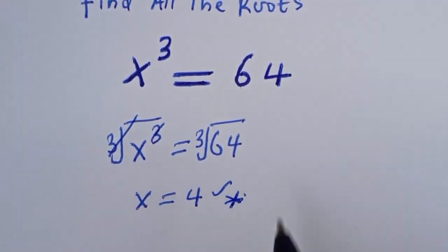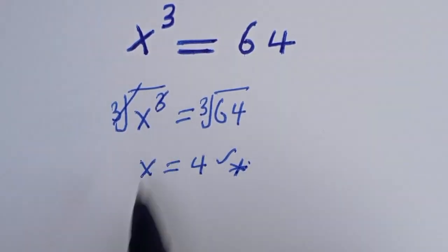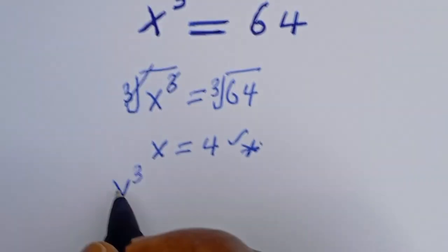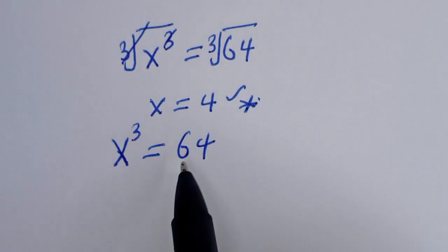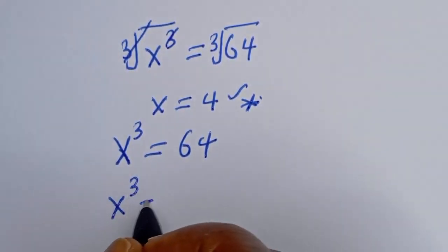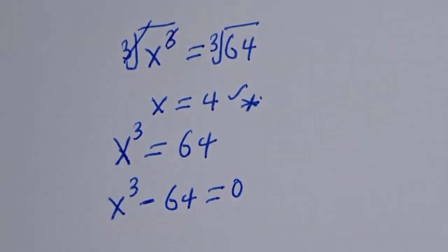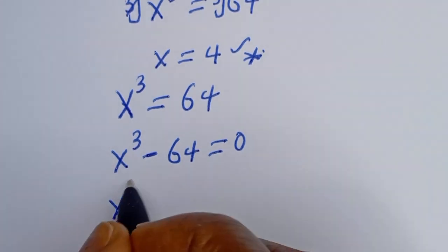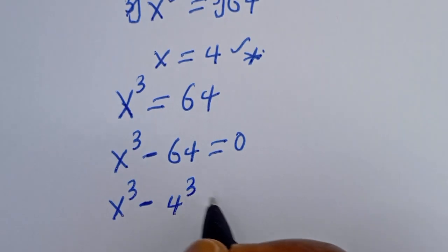Let's find all the roots of this equation. We have s to the power of 3 is equal to 64. Let's take everything to one side: s³ minus 64 is equal to zero. And we note that 64 is 4 to the power of 3, so s³ minus 4³ is equal to zero.